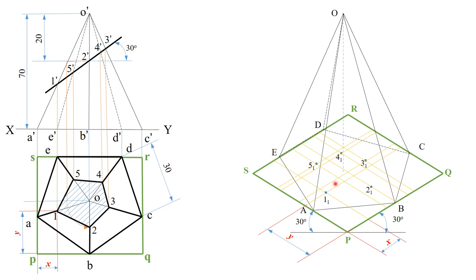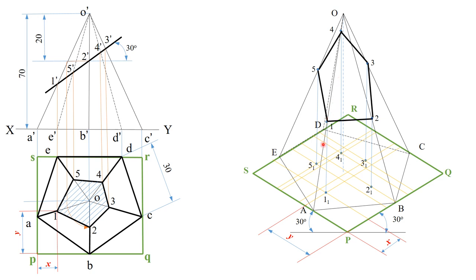The next step is straightforward: extend all the transferred base points vertically upwards so that each cuts its respective slant edge. Point 1-1 is extended to cut slant edge OA at section point 1. Point 2 is extended to cut slant edge OA at point 2. Point 3 cuts slant edge OC at point 3. Similarly, points 4 and 5 are extended vertically to meet their respective slant edges.